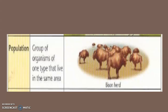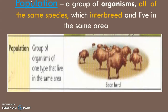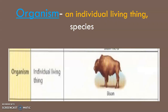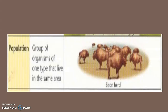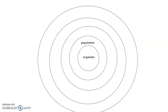A population is a group of organisms all of the same species which can interbreed and live in the same area. One bison would be an organism, but a group of bison would be a population. You can't say a group of bison and a group of frogs is a population, because frogs and bison can't have babies together. Population means several of the same type living in the same area that can interbreed.